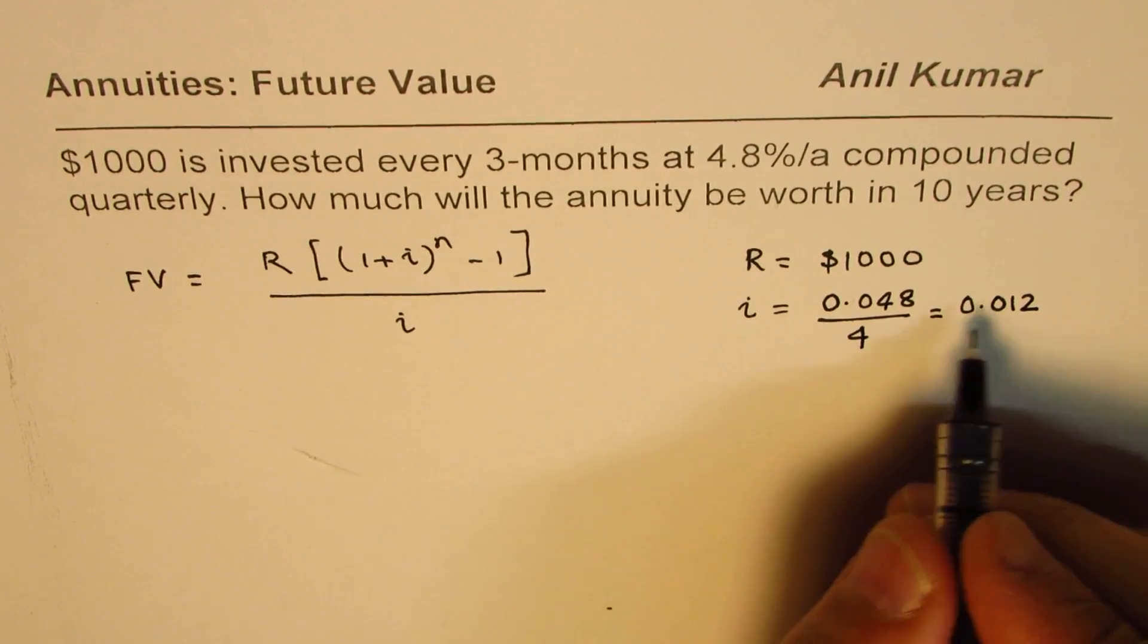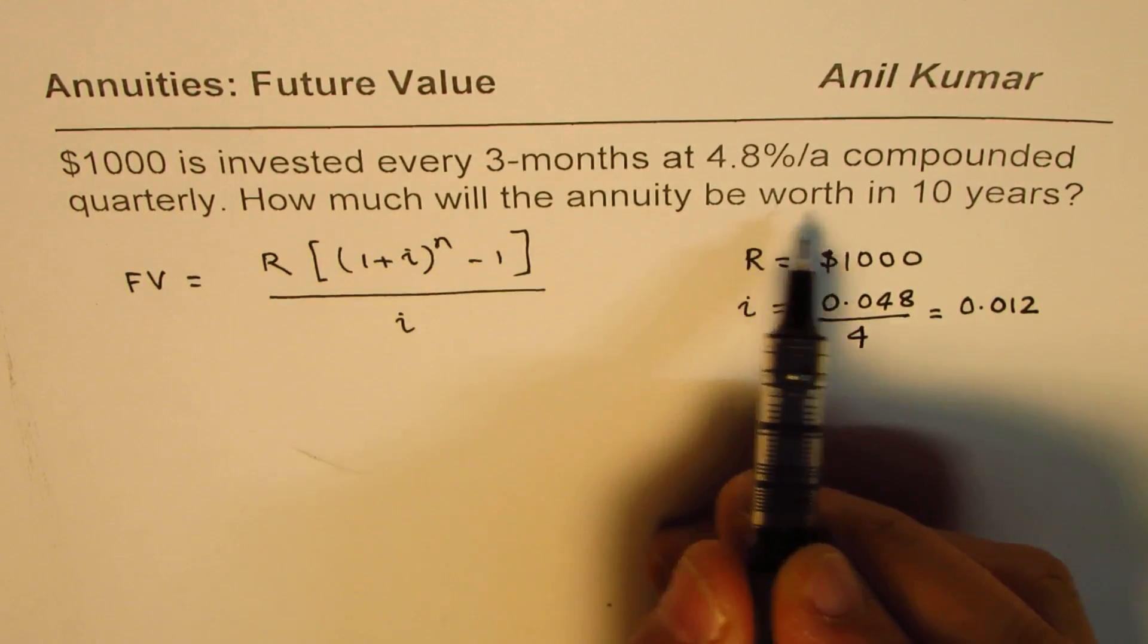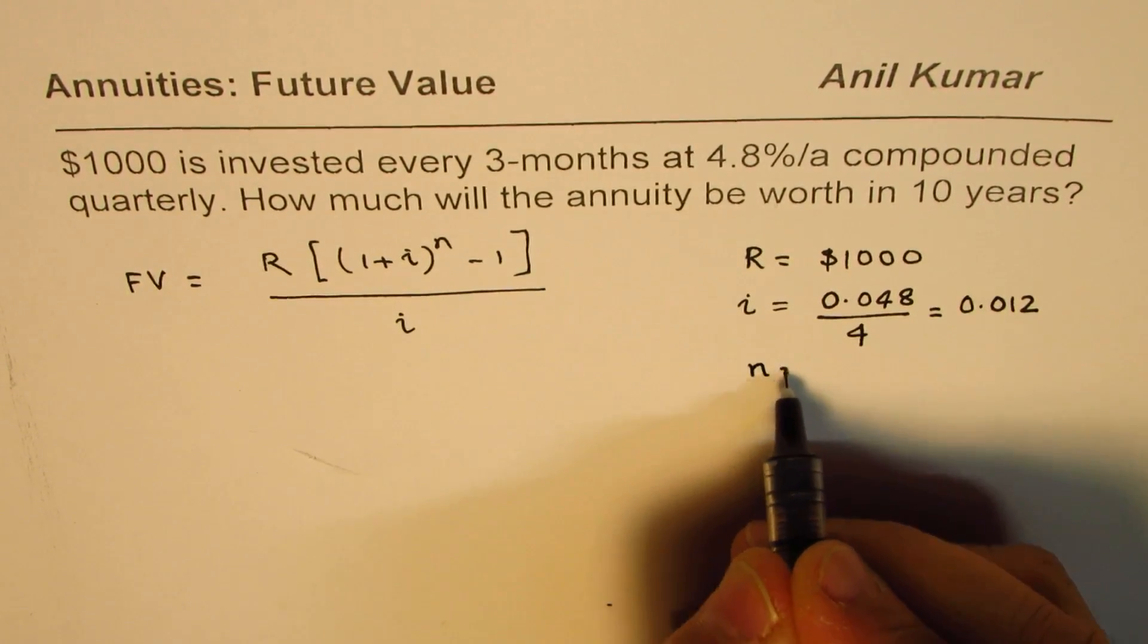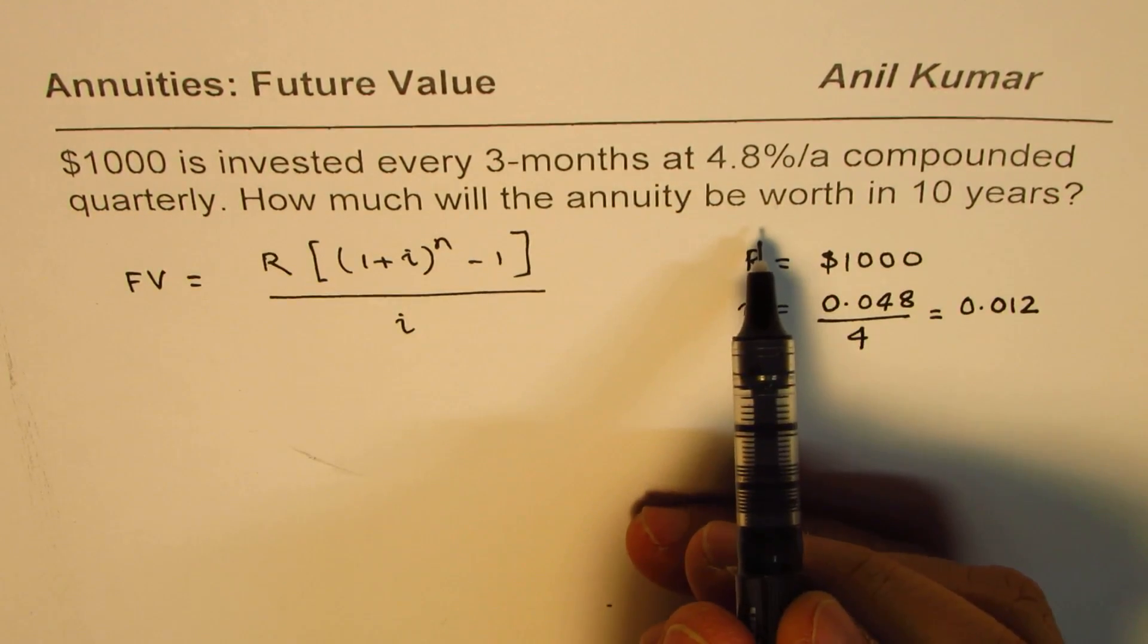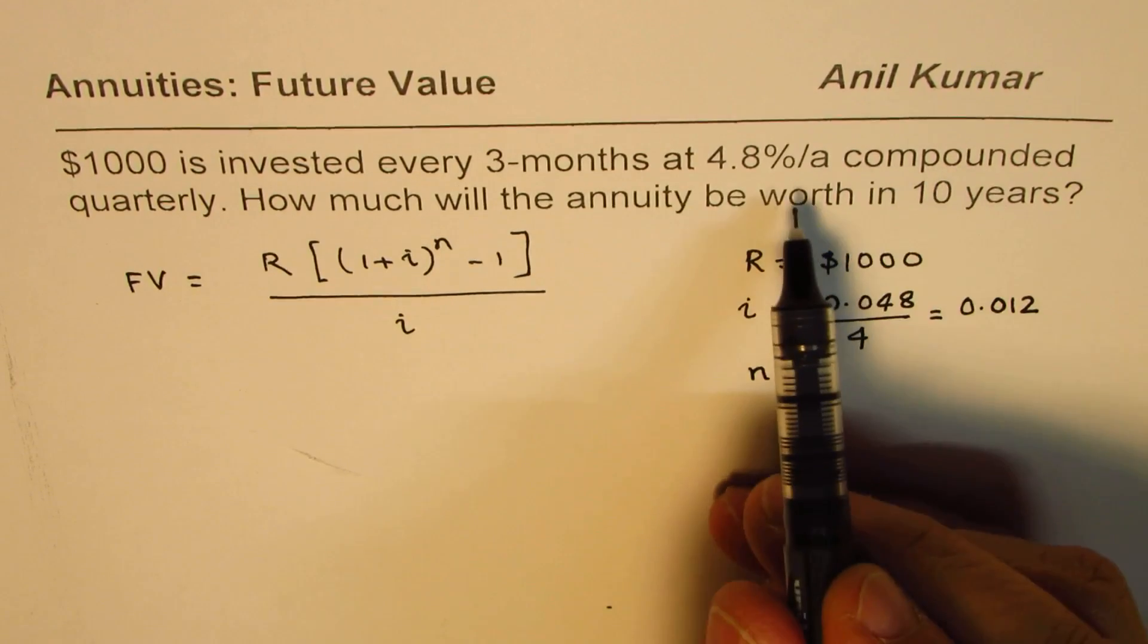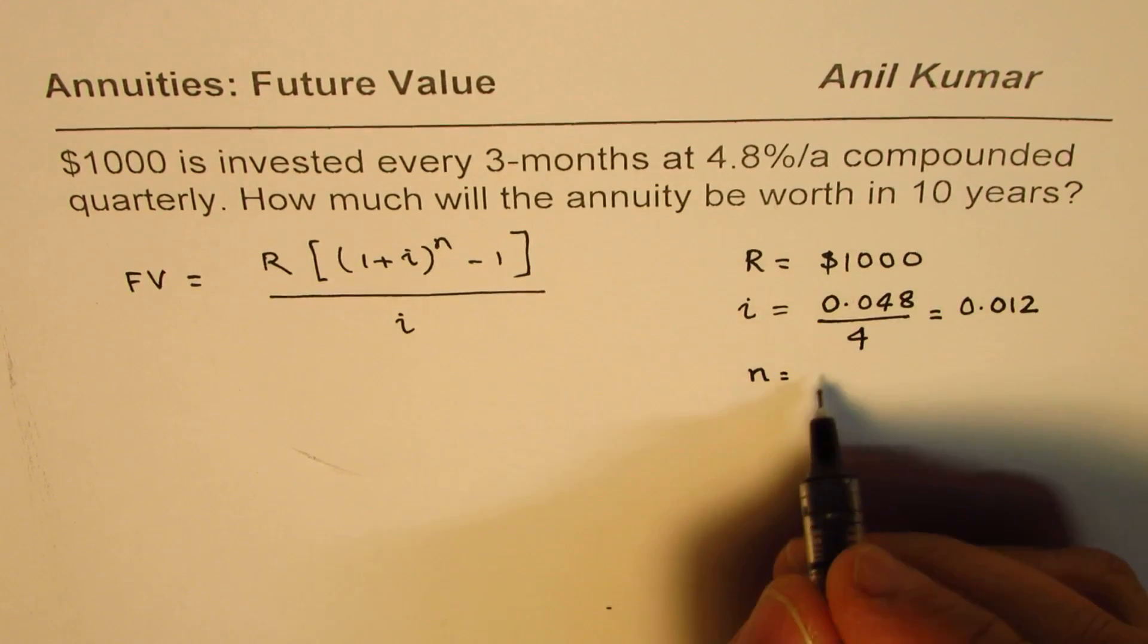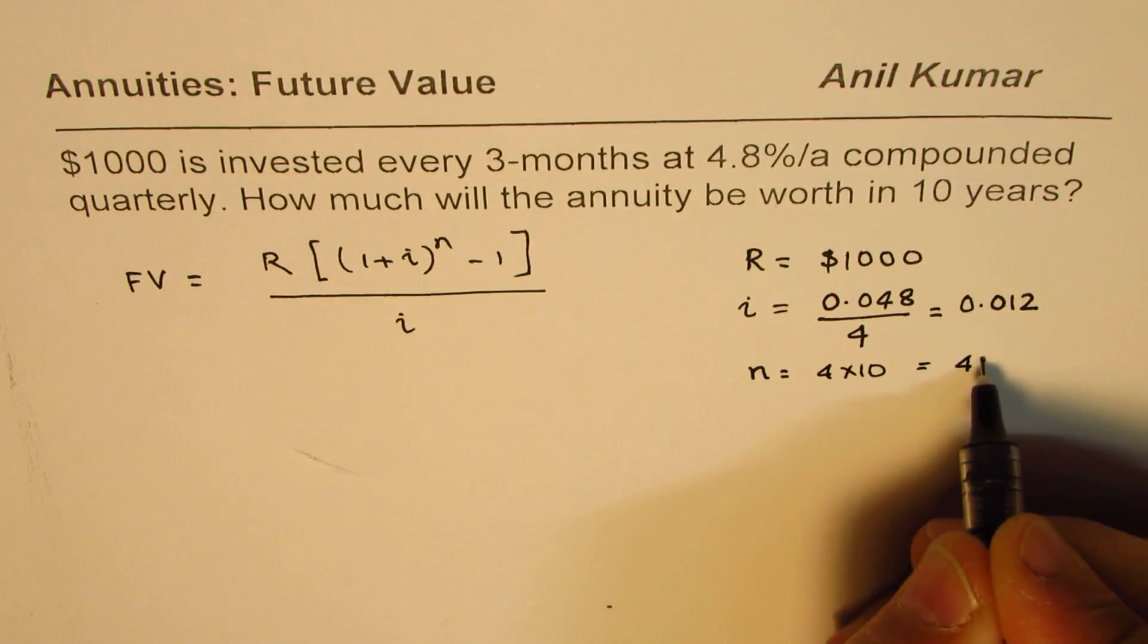How much will the annuity be worth in 10 years? The number of times you have to deposit and the number of times the compounding periods are applied will be 4 times 10, which is going to be 40.